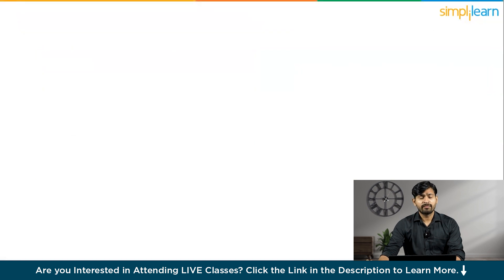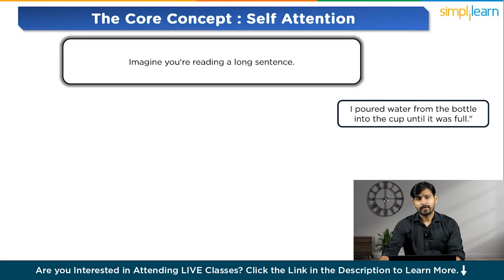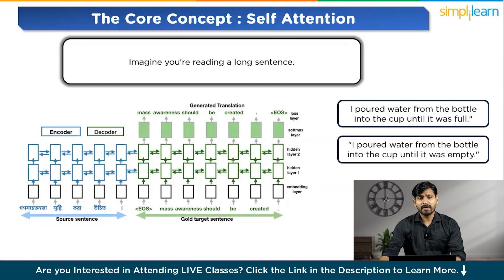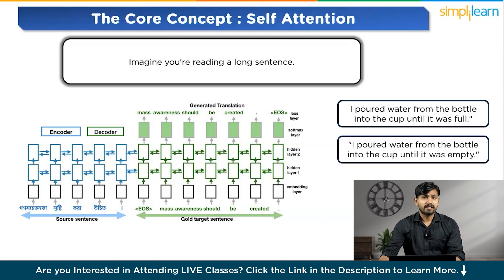Let us understand some core concepts before understanding Transformers. The first one is: what is Attention? Imagine you are reading a long sentence — to understand it fully, you don't read it word by word in isolation; you relate the words to each other to make sense of the sentence as a whole. Attention helps the model do this by focusing on the most important words in the input sequence when generating the output. For example, if you are translating the sentence 'I see the red house' into French, the model needs to focus on the word 'house' to translate it correctly. Attention ensures the model gives importance to the right word at the right time.